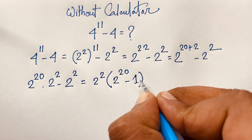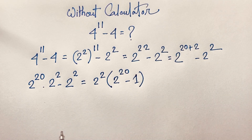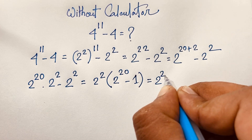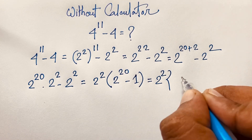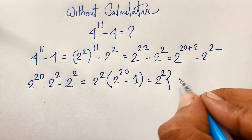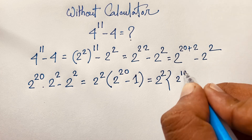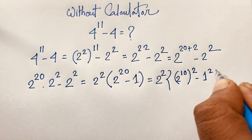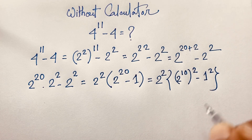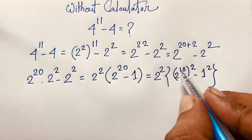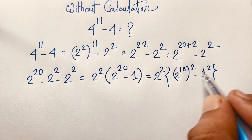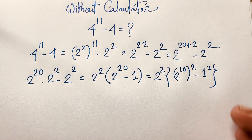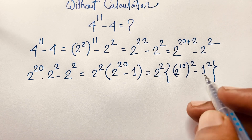Now at this moment, I consider this expression: 2 to the power 2 times 2 to the power 20 minus 1. I can write 2 to the power 20 as 2 to the power 10, whole to the power 2, because 10 times 2 equals 20. And the 1 squared is just 1.